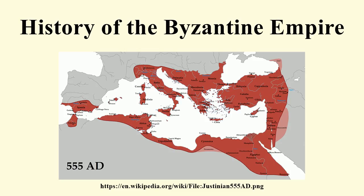Justinian I, who assumed the throne in 527, oversaw a period of Byzantine expansion into former Roman territories. Justinian, the son of an Illyrian peasant, may already have exerted effective control during the reign of his uncle, Justin I. In 532, attempting to secure his eastern frontier, Justinian signed a peace treaty with Khosrau I of Persia agreeing to pay a large annual tribute to the Sassanids.